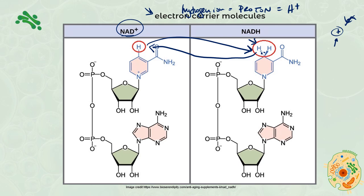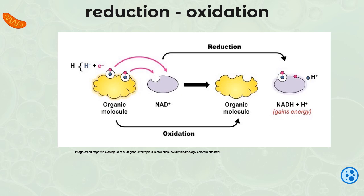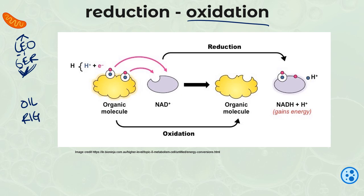We call that oxidation and reduction. There are a couple of nice mnemonic devices to help us remember. I like 'Leo says GRR' because lions are super cute — when we Lose Electrons, that is Oxidation; Gain electrons is Reduction. This isn't the most fabulous mnemonic because it implies only electrons can be gained or lost, but protons can also be gained or lost. Another mnemonic is OIL RIG, which is not electron-specific: Oxidation Is Loss, Reduction Is Gain.